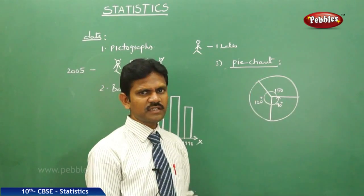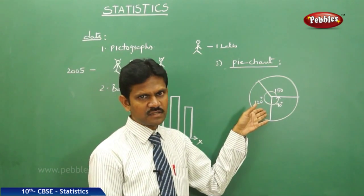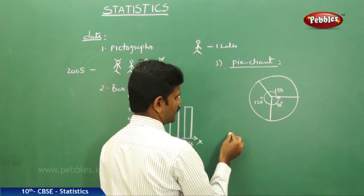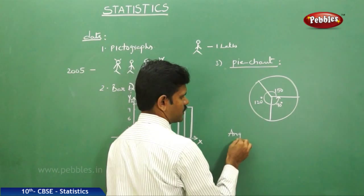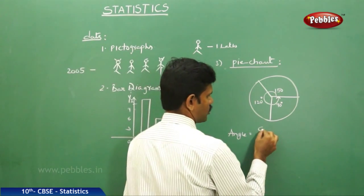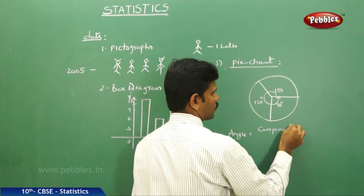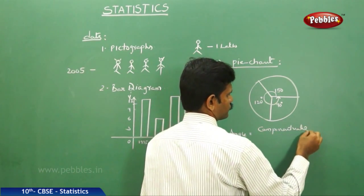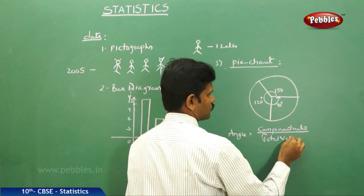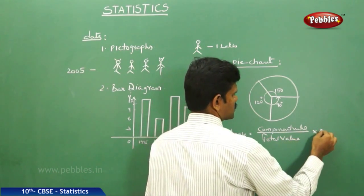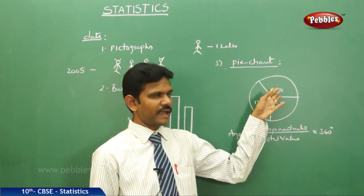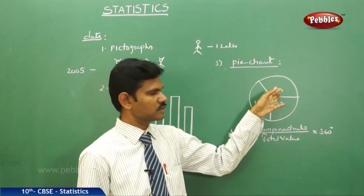Representing data in terms of the sectors of a circle is called a pie chart. To find the angle in a pie chart, the formula is: angle = (component value / total value) × 360. Using this formula, we can find the angle of each sector in a circle.